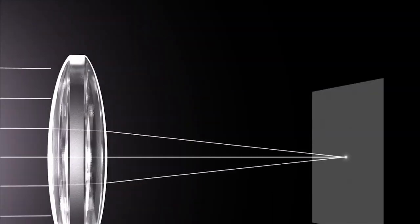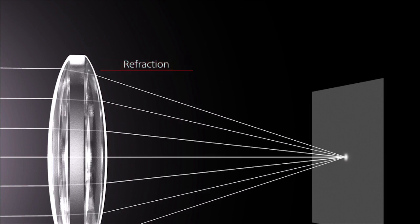When light rays pass through the lens, they do not travel in straight lines, but rather bend slightly inward. This phenomenon is called refraction.